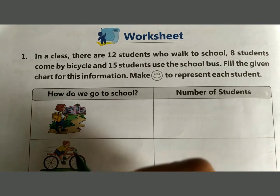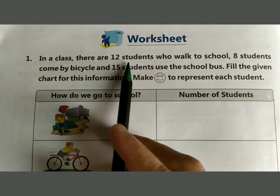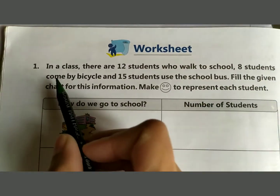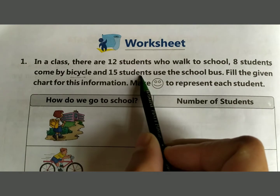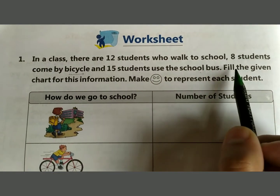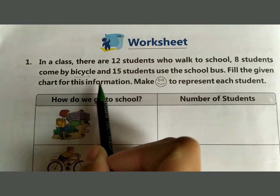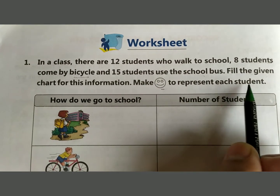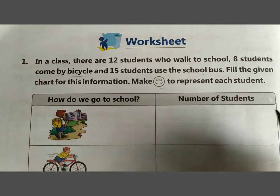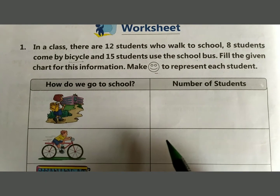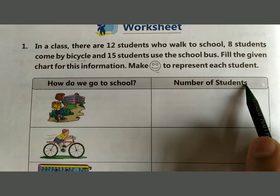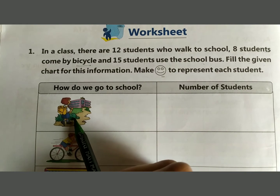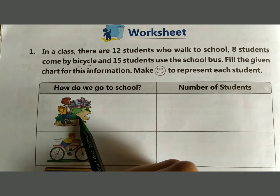Worksheet question number one. In a class, there are 12 students who walk to school, 8 students come by bicycle, and 15 students use the school bus. Fill the given chart for this information using a smiley to represent each student. How do we go to school? Number of students.